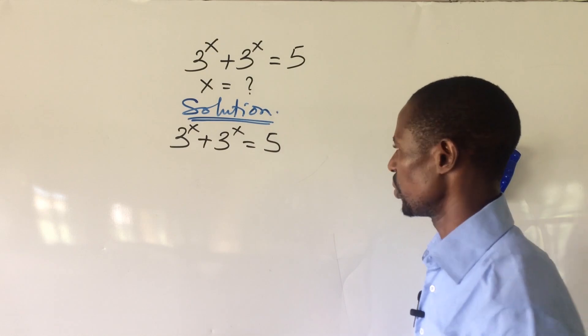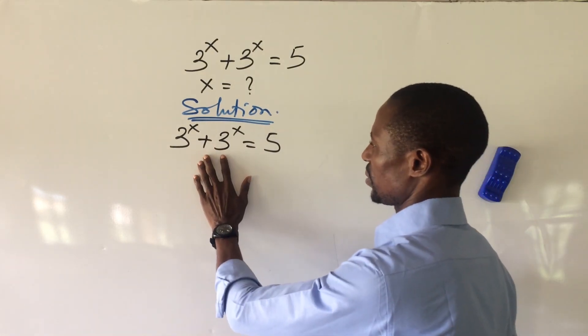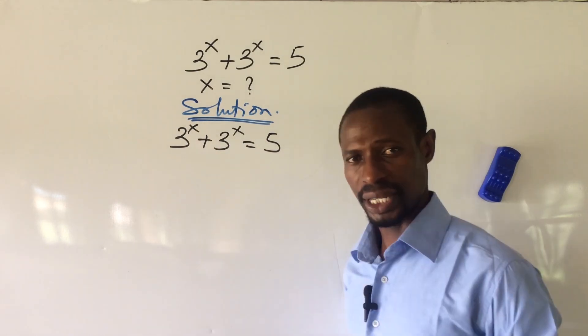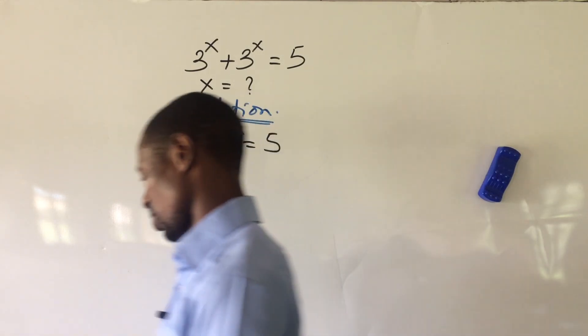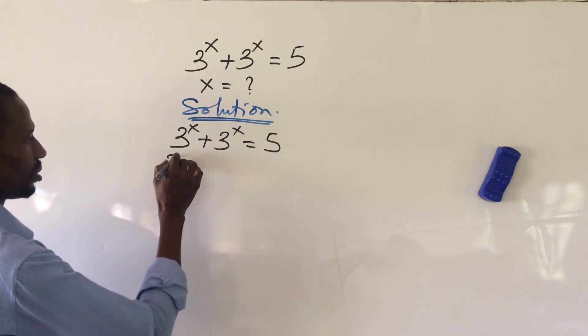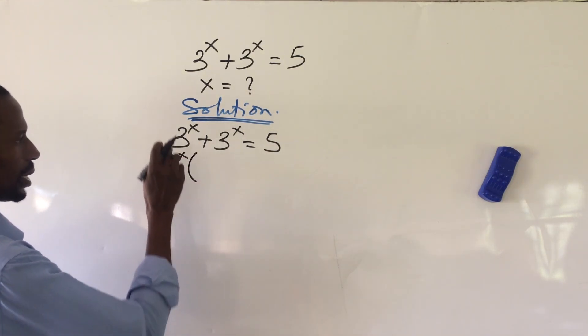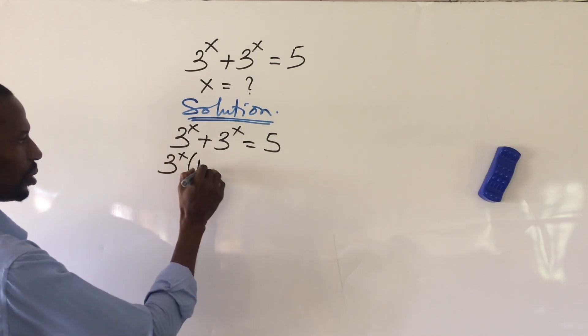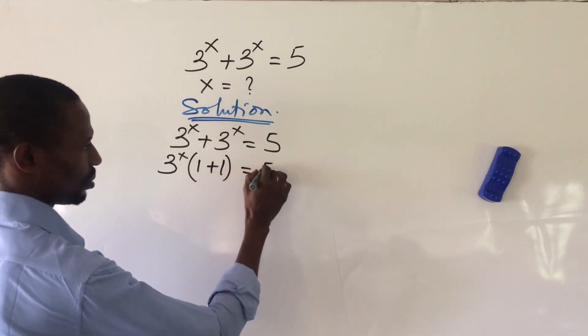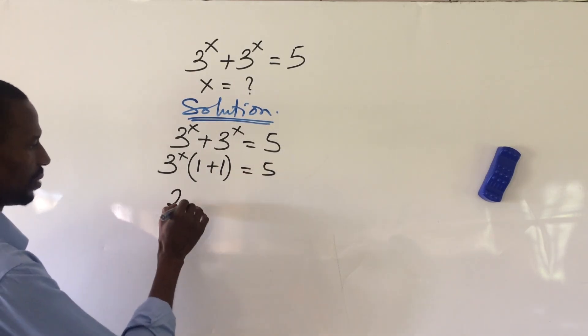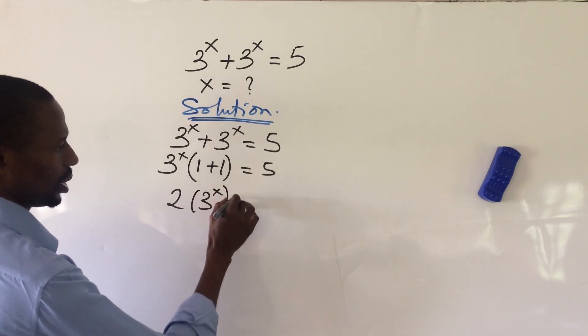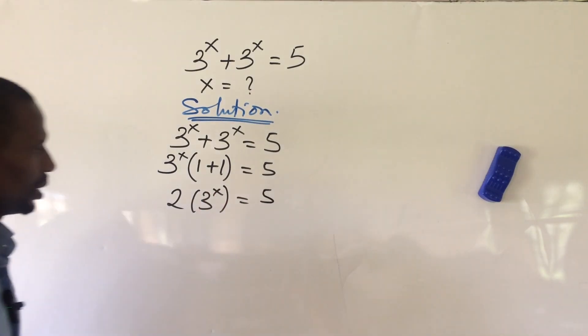Now, the number one thing we're going to do here is to factor out 3 to the power of x because we have 3 to the power of x here and 3 to the power of x here. If we do that, we're going to have 3 to the power of x bracket, here we're left with 1 plus 1, close bracket, equal to 5. So automatically we have 2 into 3 to the power of x equal to 5.